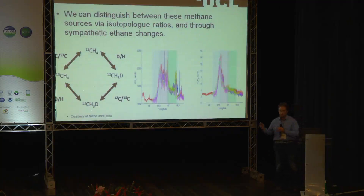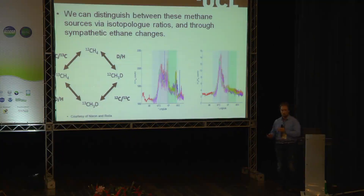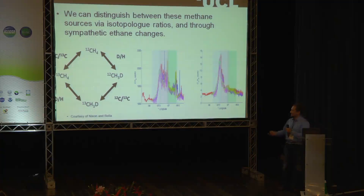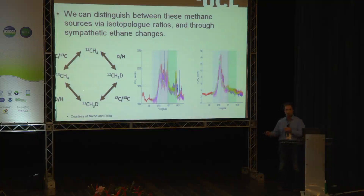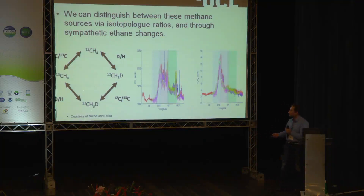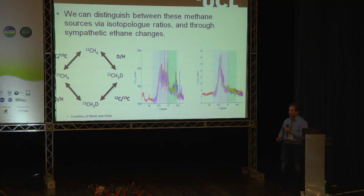So how do we do this? There were two methods we were employing. The first is via the use of what are called isotopologues — and I took some convincing that that is actually a word in the English language. The key ones we're using here are carbon-12 methane and carbon-13 methane. Carbon-12 methane makes up about 98% of atmospheric methane, while carbon-13 methane is about 1.1%. We're going to be using a ratio of these two in order to determine the source of methane.